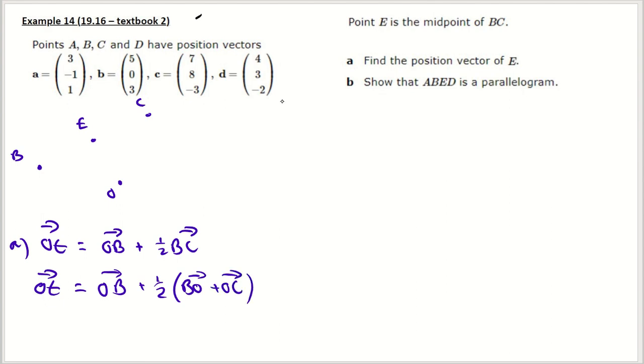Then I can just use the vector one. We've done a lot of this using position vectors to get displacement vectors. So 5, 0, 3, plus a half of the opposite, so negative 5, 0, negative 3, plus 7, 8, negative 3.